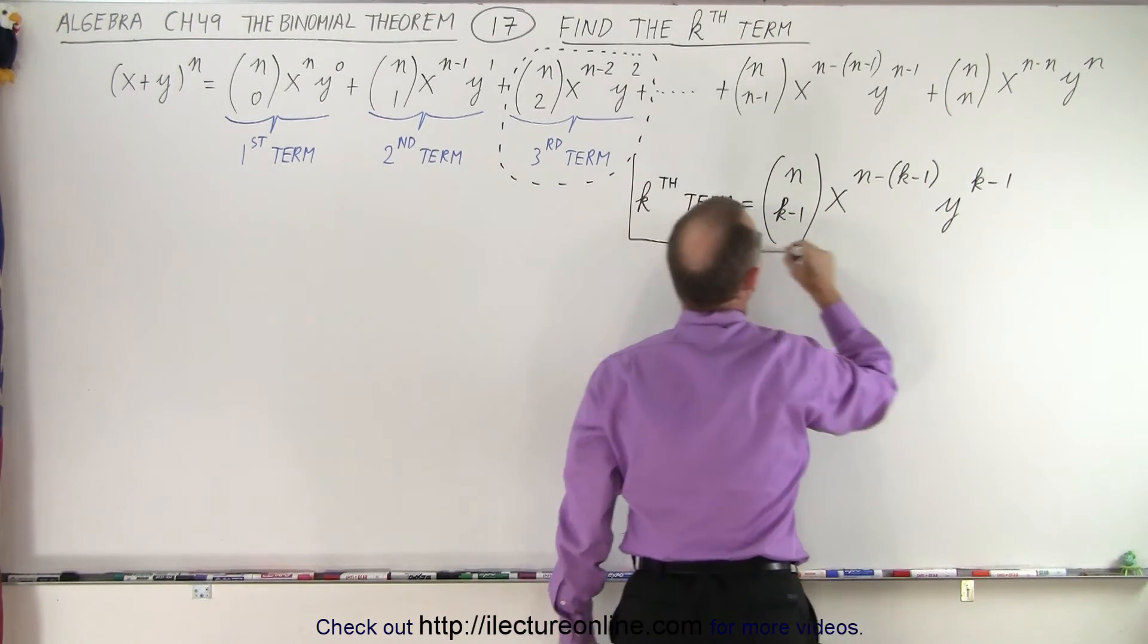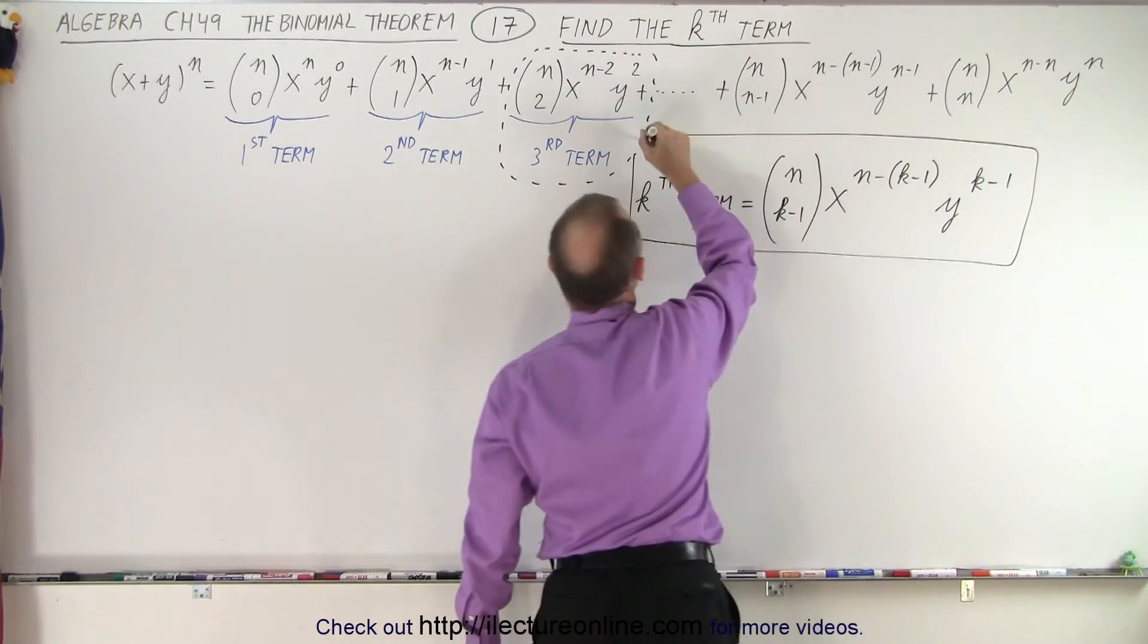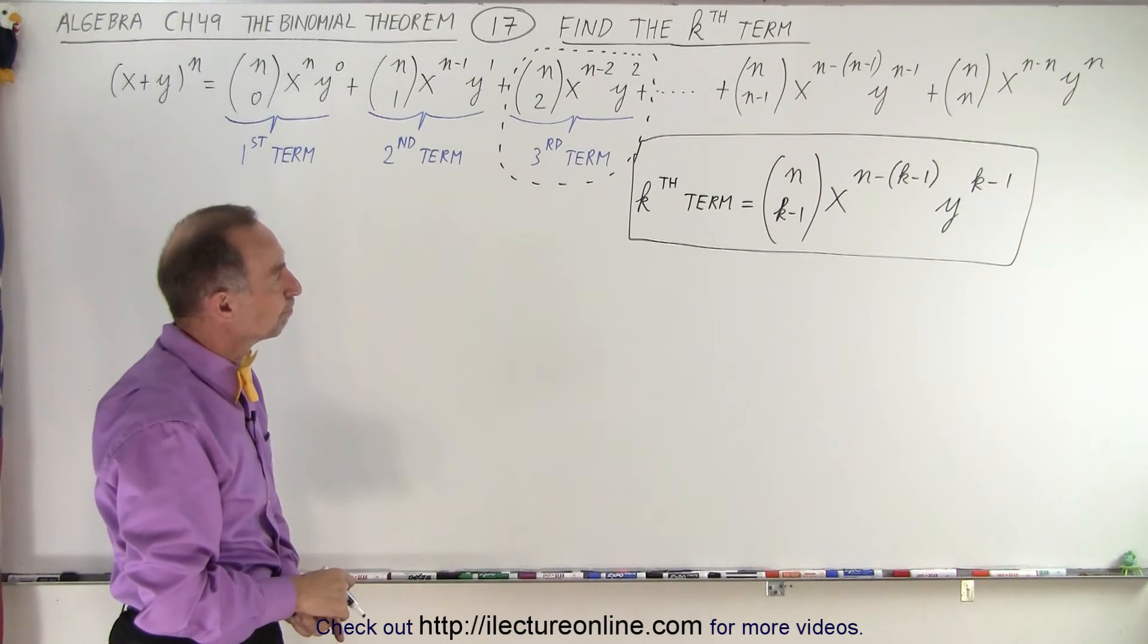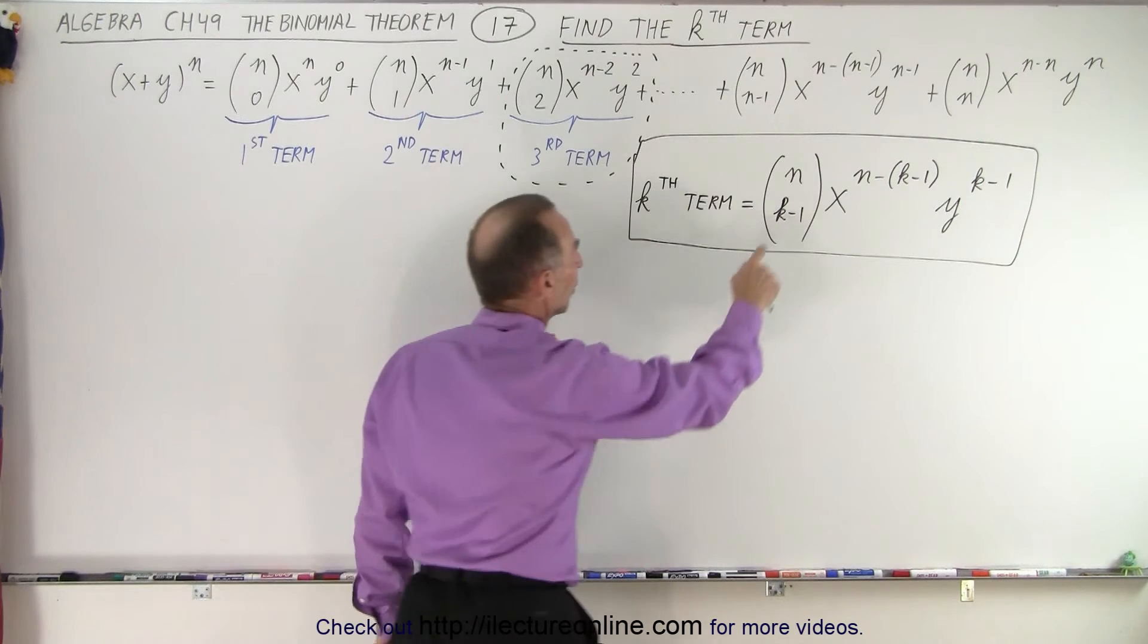This is the general equation or the general formula to find the kth term of any binomial expansion. So you can see that here, again,